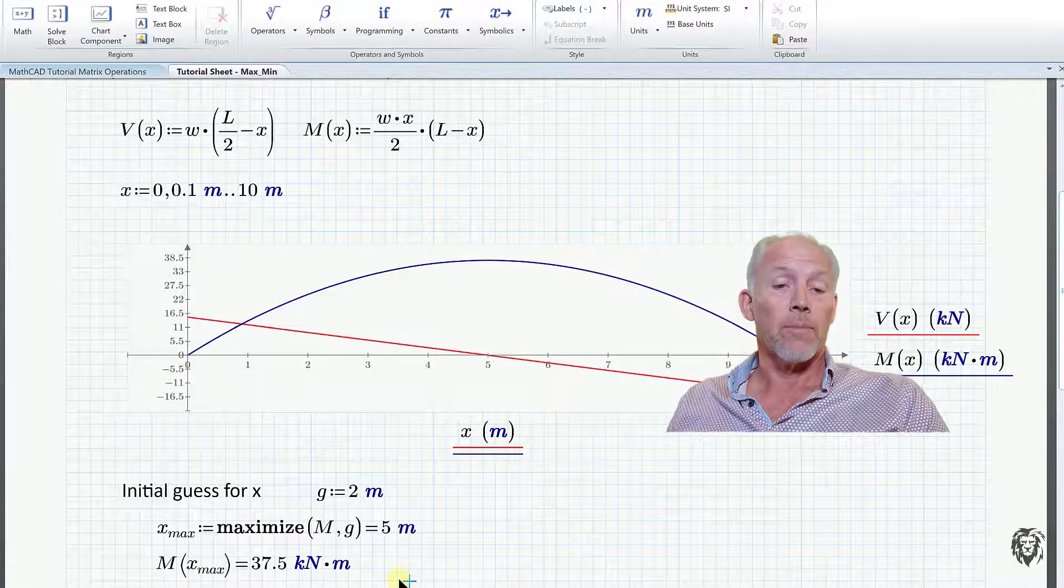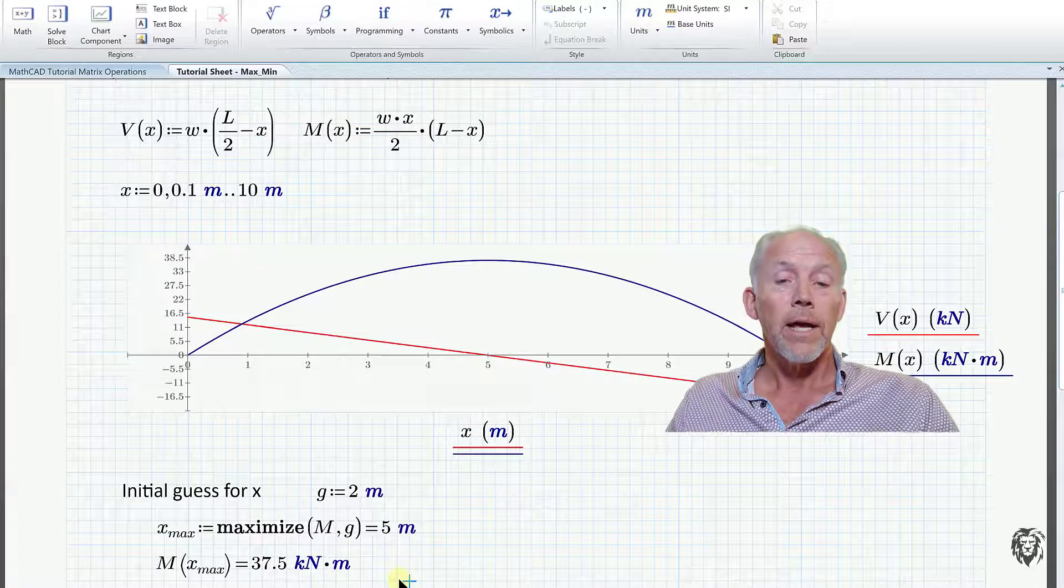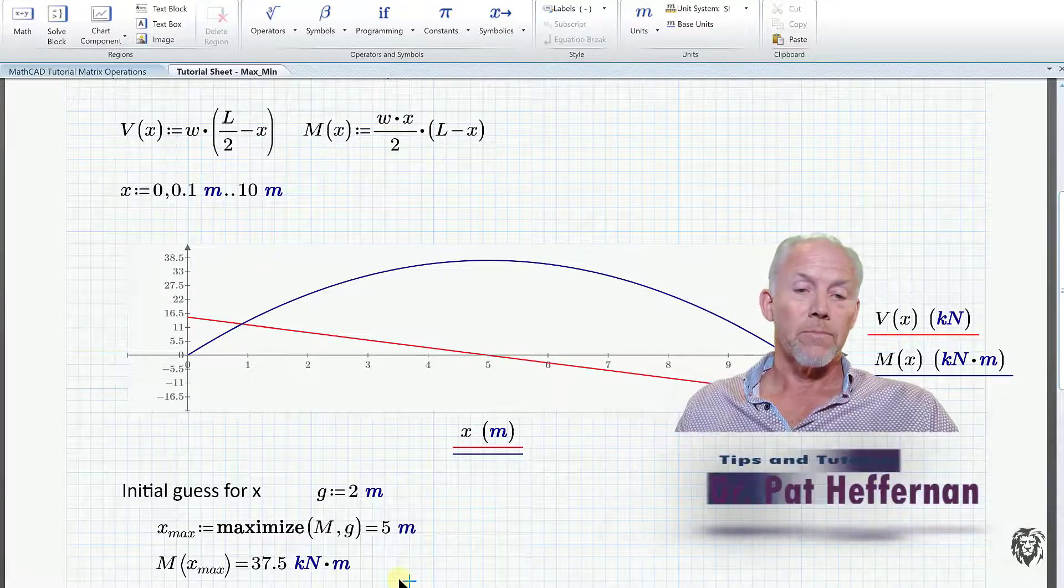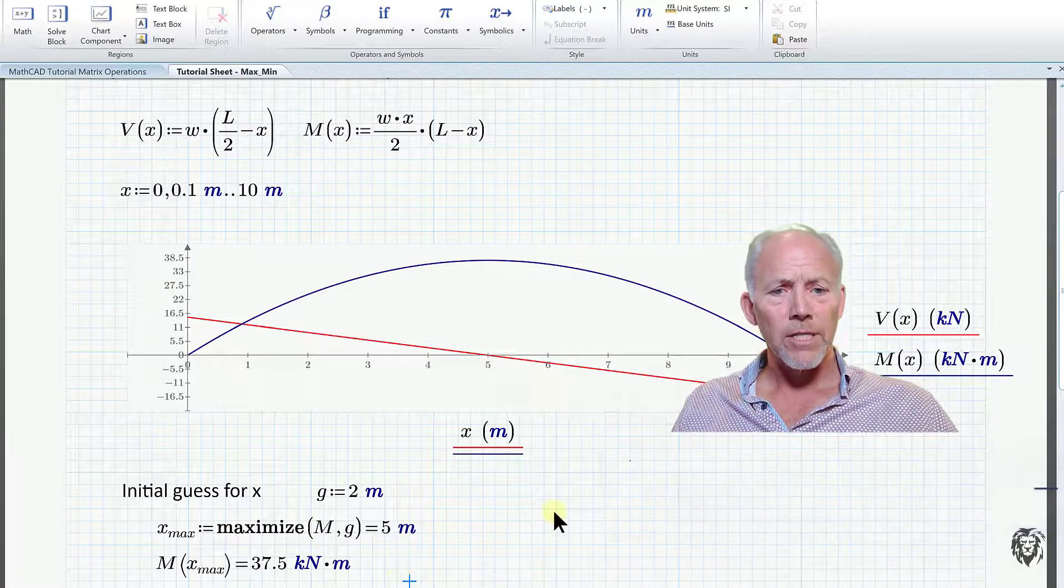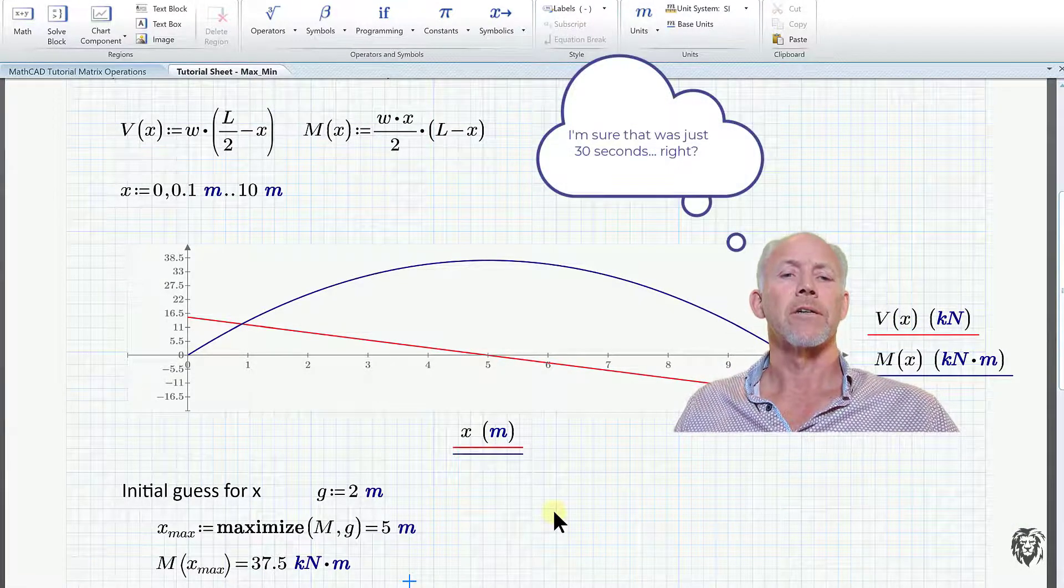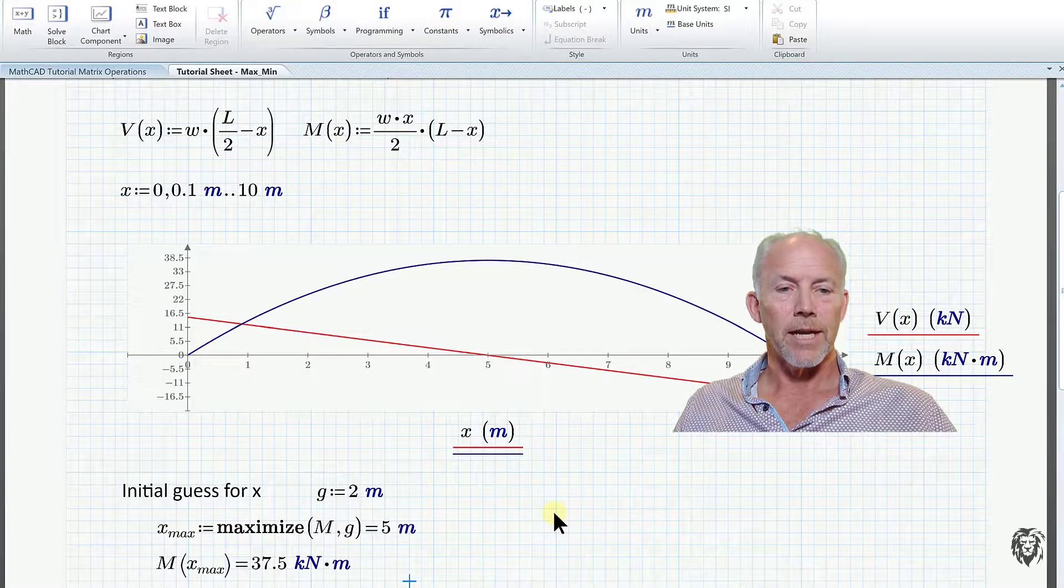So even if it had occurred somewhere other than where we knew it to occur or thought it might occur, we would be able to figure it out. Automate our spreadsheet to come up with the maximum moment at a very distinct value. So there you go. Just a 30 second addition to what Matt gave us. Hope you have fun with it and are able to use that to effect.